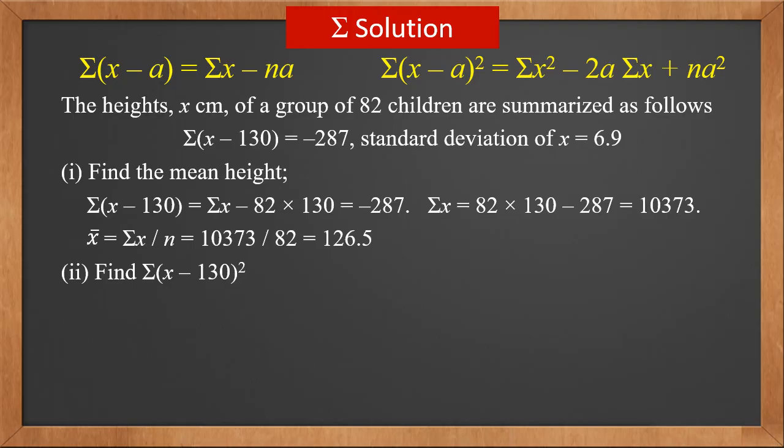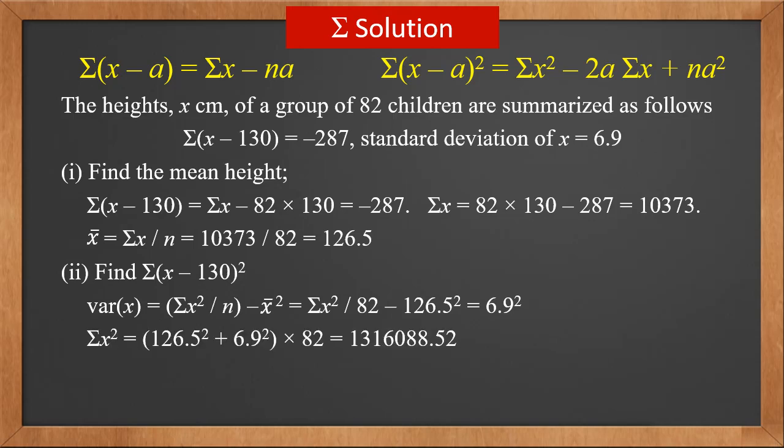For the second part, we know var x is sigma x squared over n, minus x bar squared. This is sigma x squared over 82, minus 126.5 squared. It is 6.9 squared. Therefore, sigma x squared is 1316088.52.